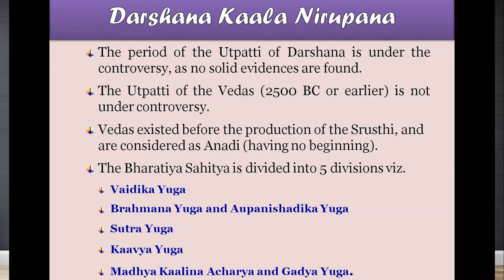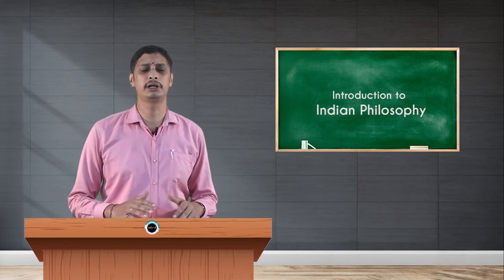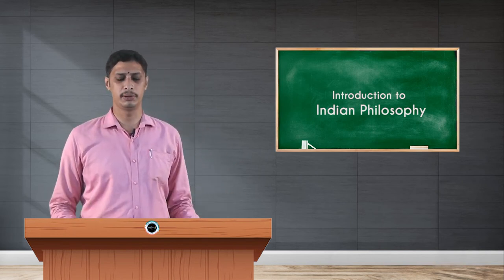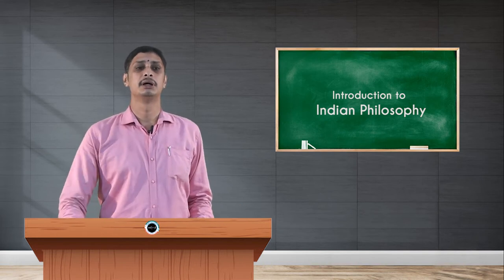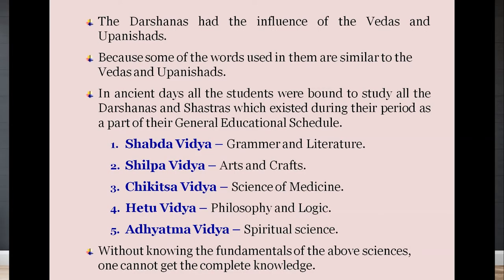Kavya Yuga was followed by Madhya Kalina Acharyas and then Gadya Yuga, where literature was published in many forms. The Darsanas had the influence of Vedas — there is no doubt — and also the influence of Upanishads, because some of the words used in them are similar to Vedas and Upanishads. In ancient days, all students were bound to study all Darsanas and Shastras as part of their general education.